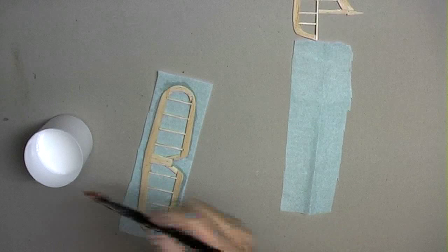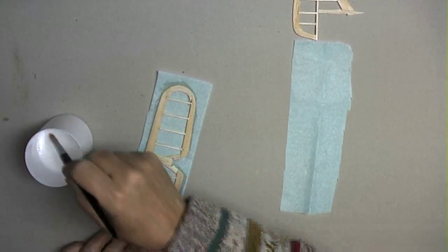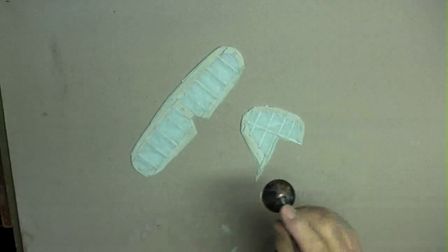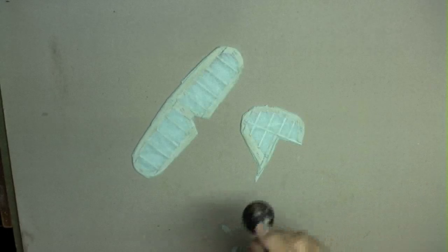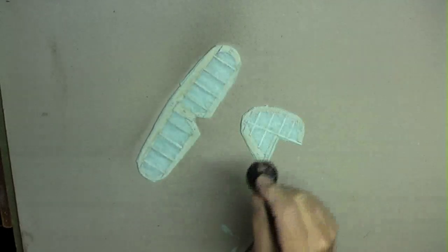Eventually, for the tail surfaces, the fragile tissue was pasted on with PVA adhesive. When this was dry, it was lightly sprayed with water. And when that was dry, it was treated with a coat of clear shrinking dope.